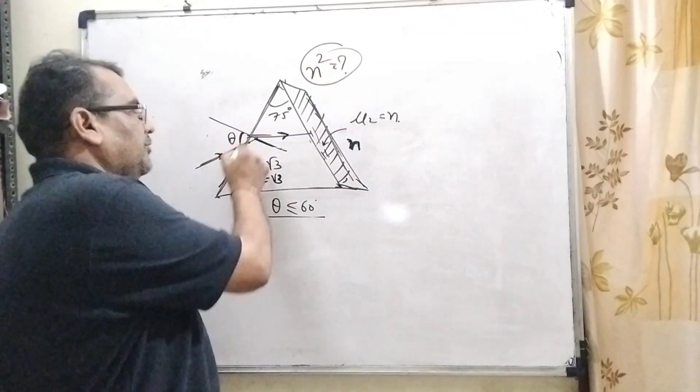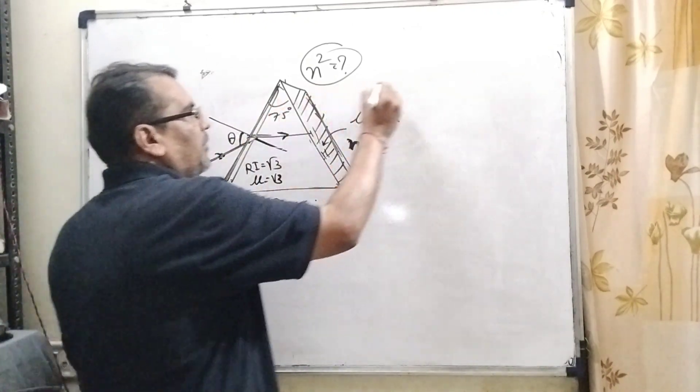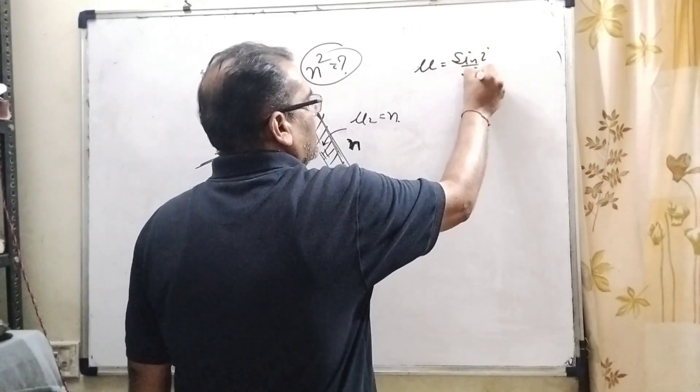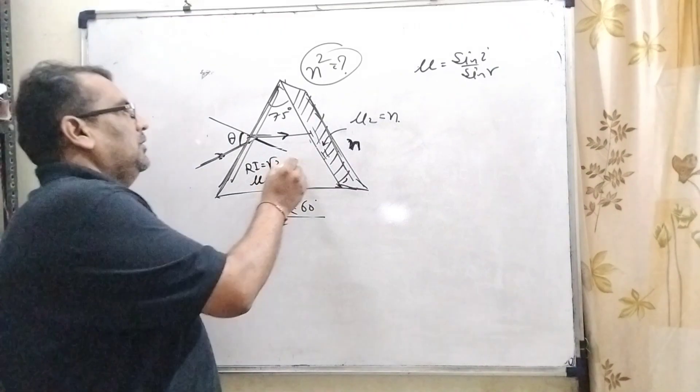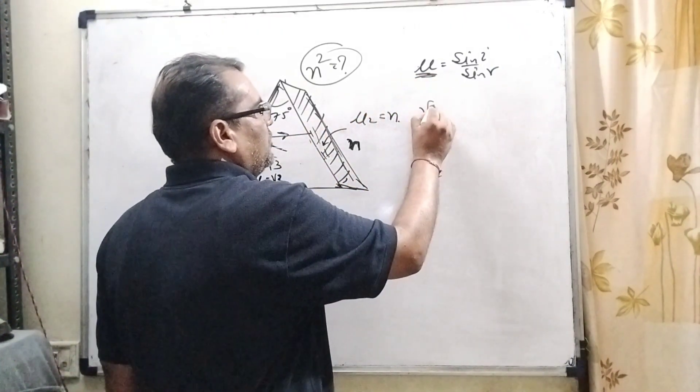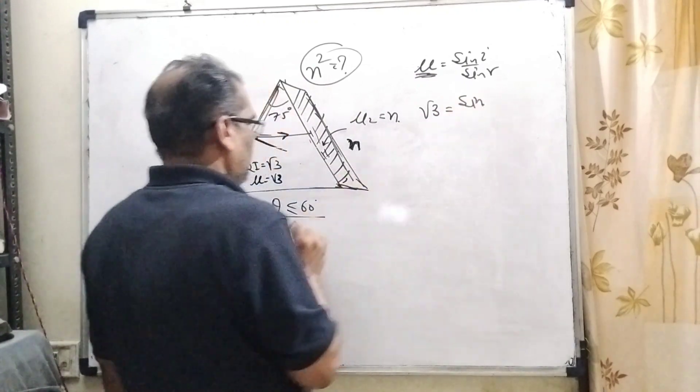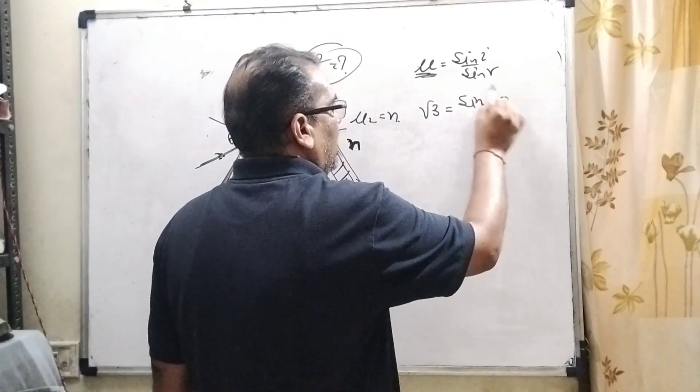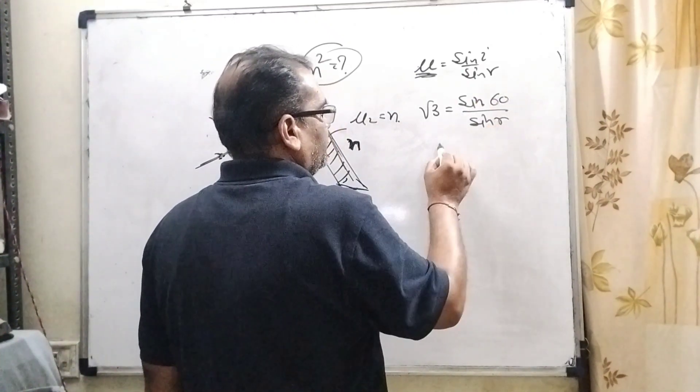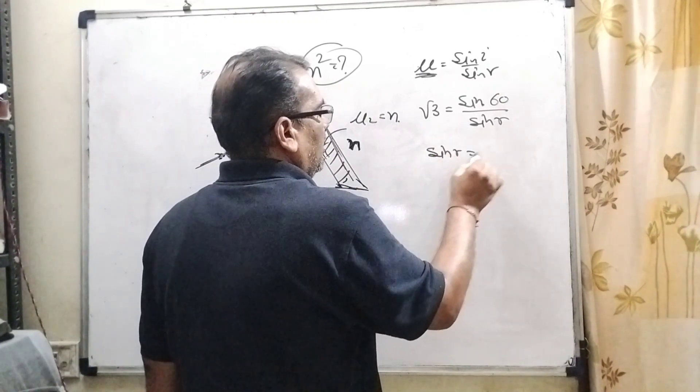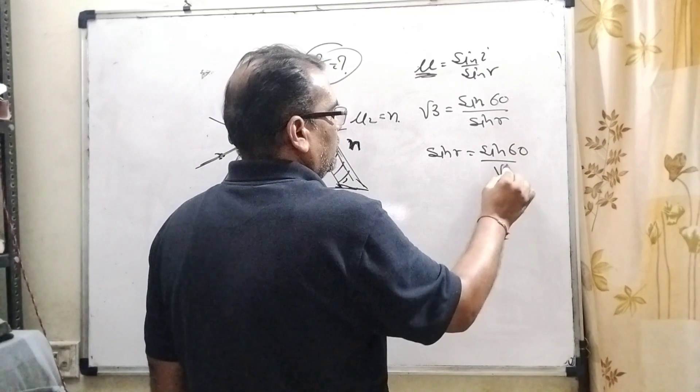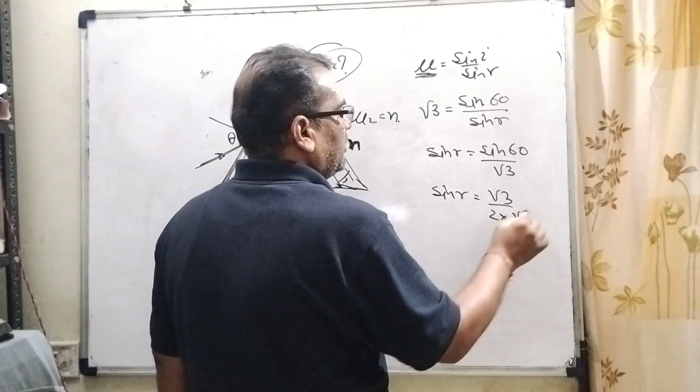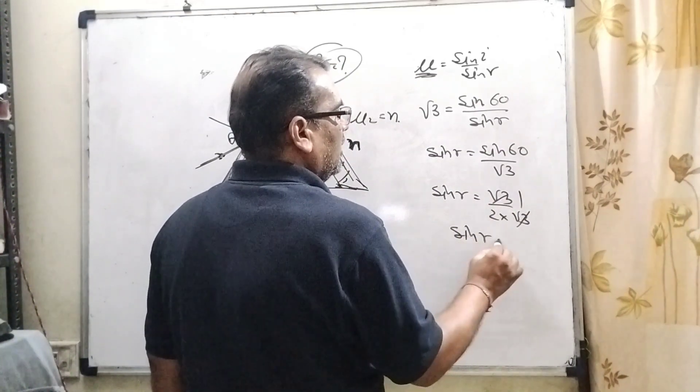So first of all, we have to take the first surface, applying Snell's law: mu equals sin i upon sin r. Here the refractive index of the material is root 3. Here theta is given less than or equal to 60. So therefore we take i equal to 60. So sin r equals sin 60 upon root 3. What is the value of sin 60? Root 3 by 2. Here root 3 and root 3 cancel out. Then sin r equals 1 by 2.